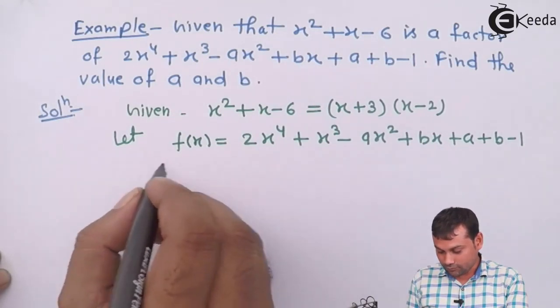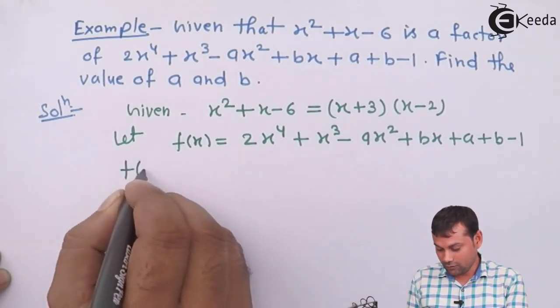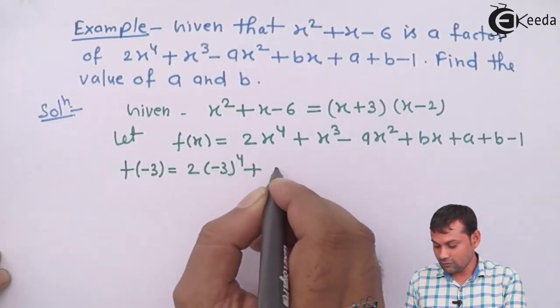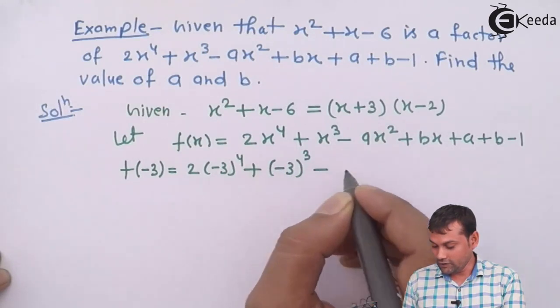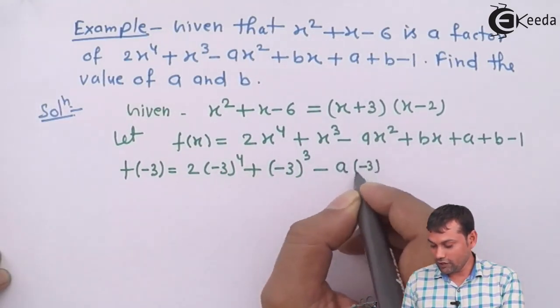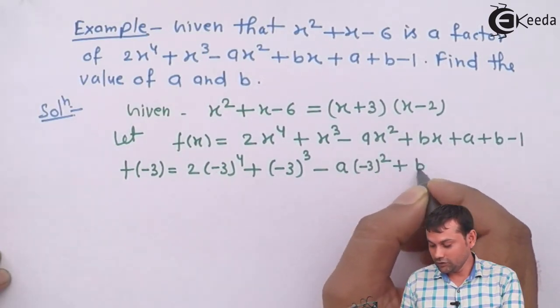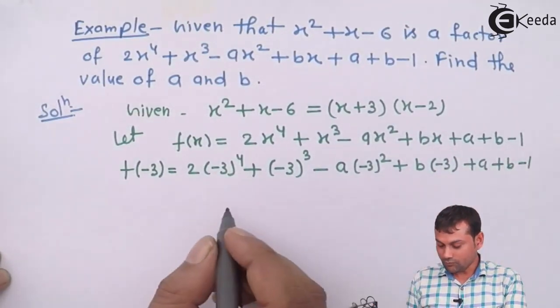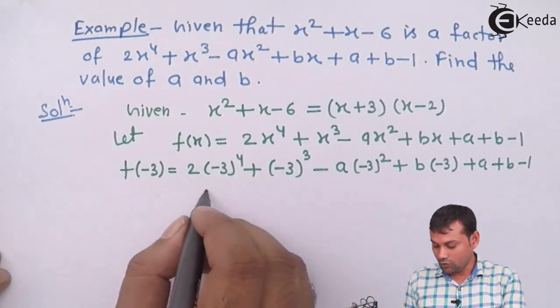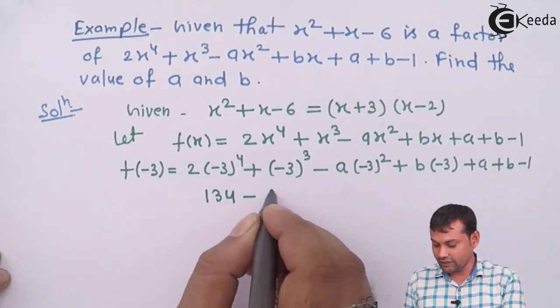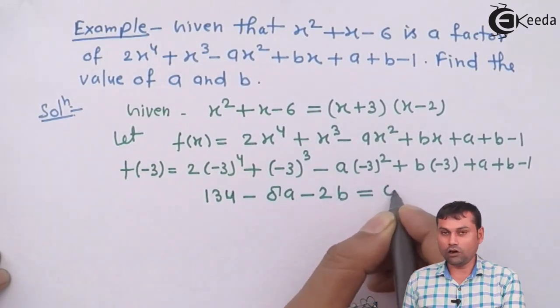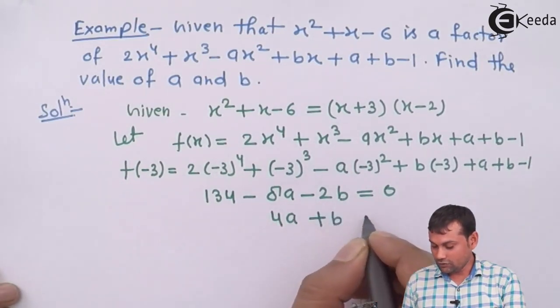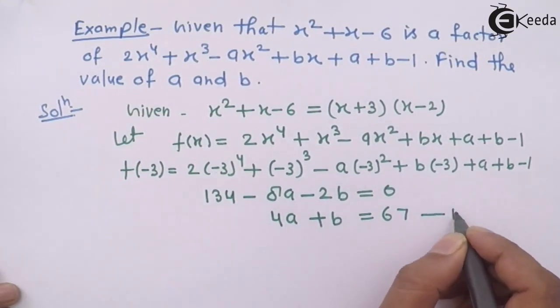x+3, x-2 is the one factor. So that will be f of -3 equals to 2(-3)⁴ + (-3)³ - a(-3)² + b(-3) + a + b - 1. When we solve this, our final answer will be 134 - 8a - 2b equals to 0. And if we simplify, we get 4a + b equals to 67.